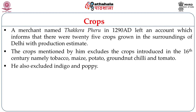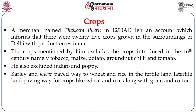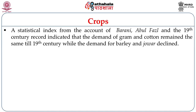Thakira Feru's list also excluded crops introduced in the 16th century, namely tobacco, maize, potato, groundnut, chili, and tomato. Barley and jowar, which were lower-grade crops fetching less money, paved the way to wheat and rice, gram, and cotton in the fertile land later. A statistical index from Barani, Abul Fazl, and 19th-century records indicated that the demand for gram and cotton remained the same until the 19th century, while the demand for barley and jowar declined considerably.